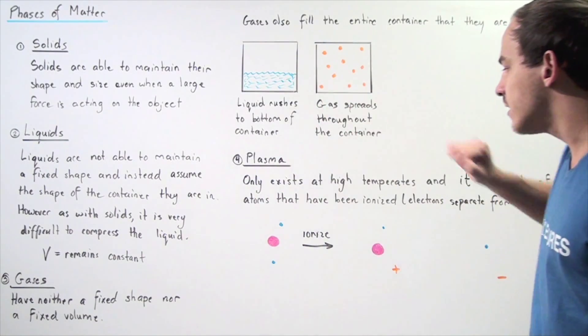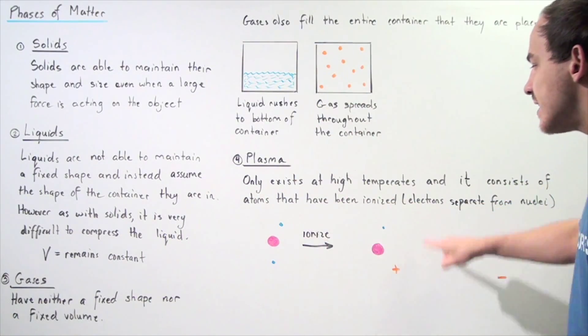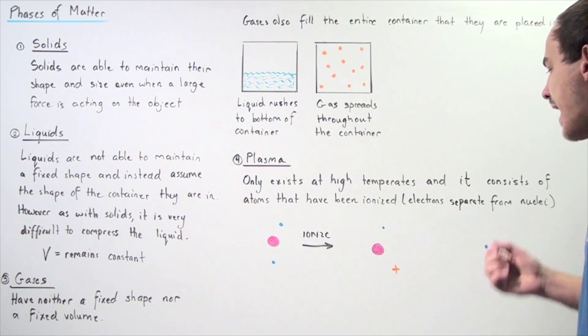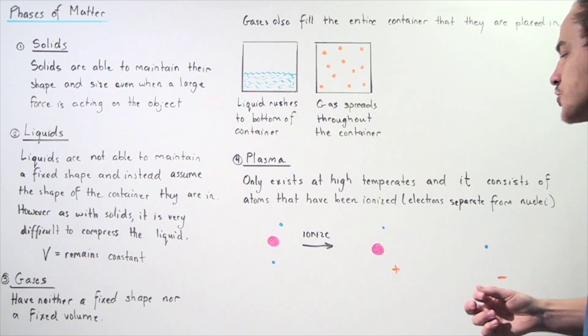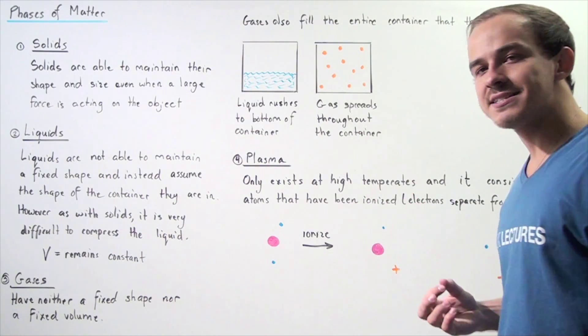And we pluck that electron away, we ionize this atom and now the atom has a positive charge because it has one less electron.